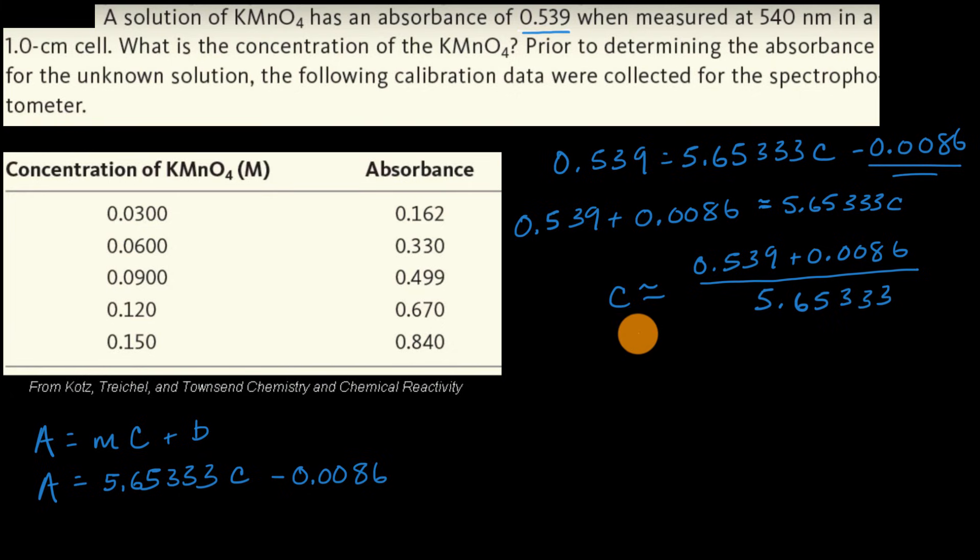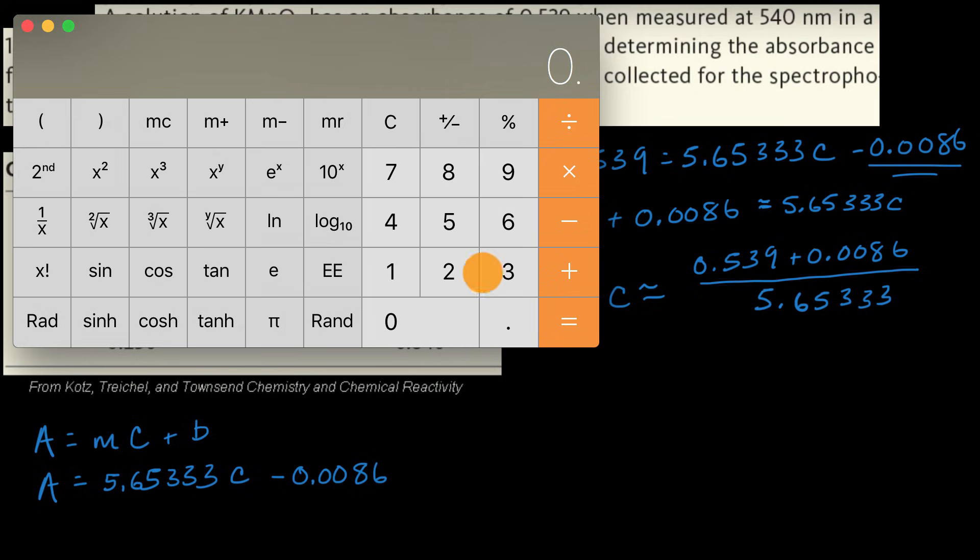We want to round to three significant figures. 0.539 plus 0.0086 equals that, divided by 5.65333 equals this. So if we go three significant figures,